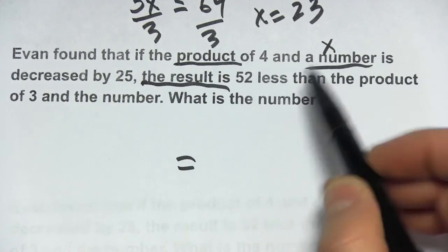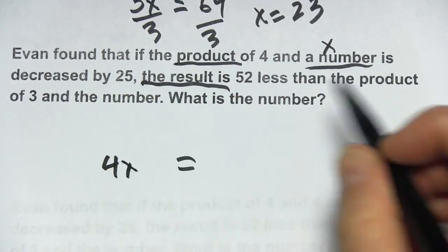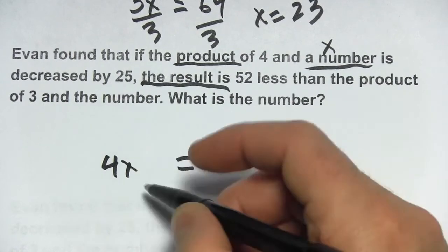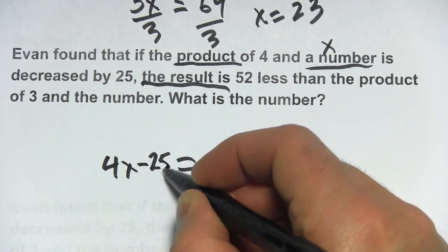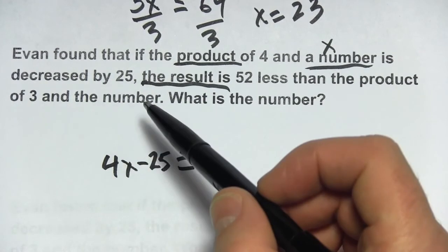So if that 4x, I'll write that, is decreased by 25. Well, to decrease something by 25, we just subtract 25 from it. And that's everything to the left.